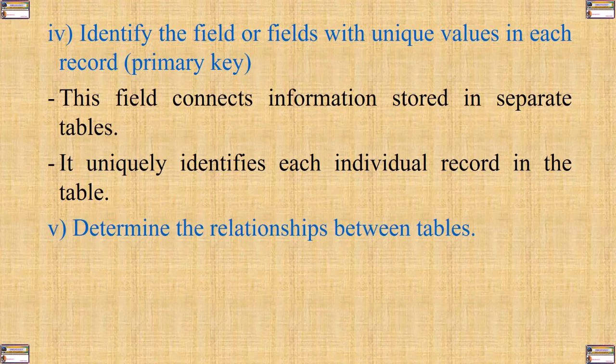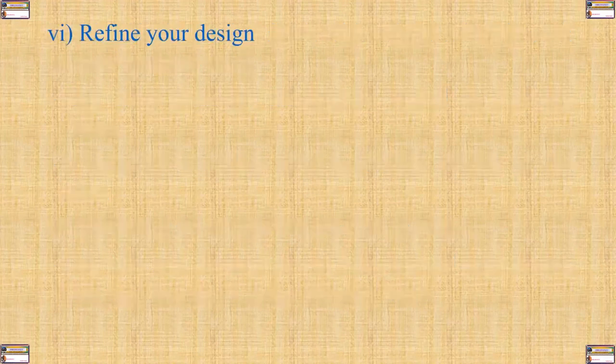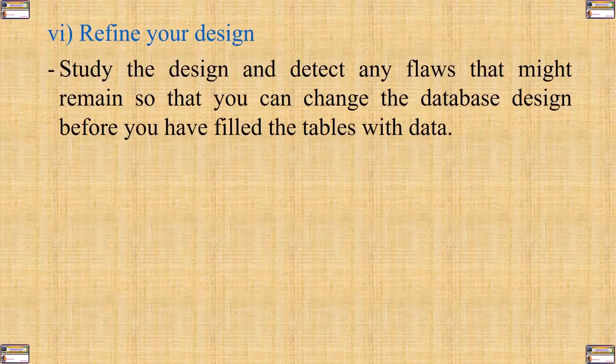Number five: determine the relationship between tables. This tells Microsoft Access how to bring related information back together again in many ways. Number six: refine your design. Start the design and detect any flaws that might remain so that you can change the database design before you have filled the tables with data.